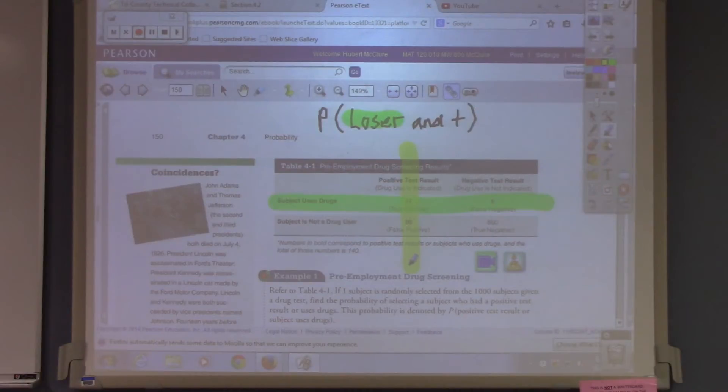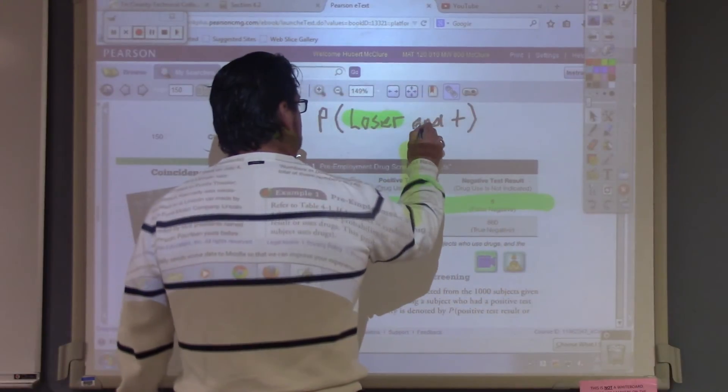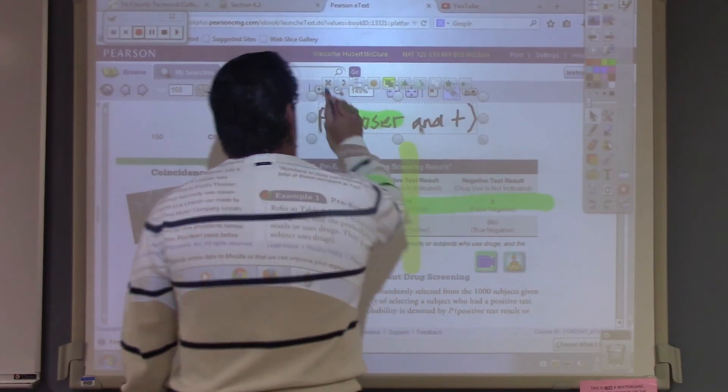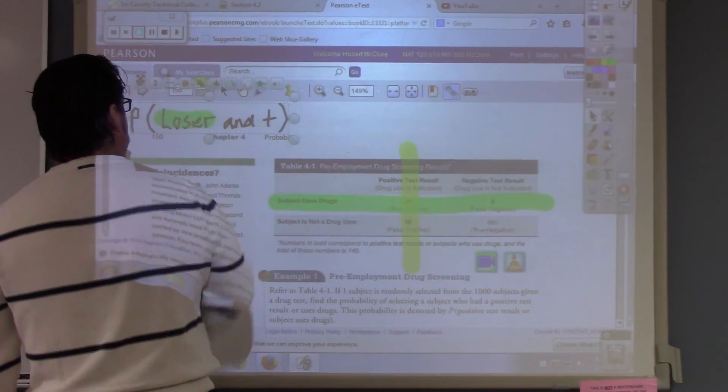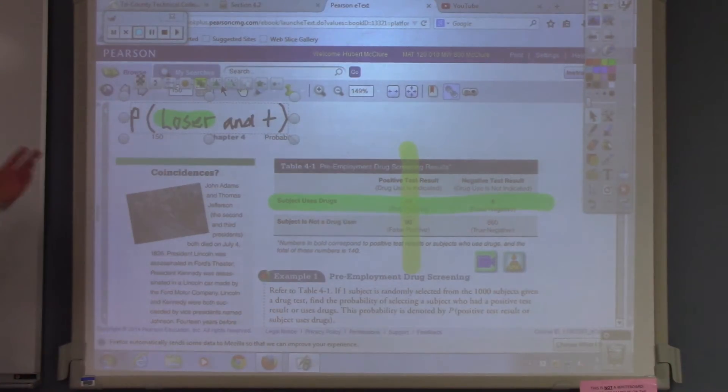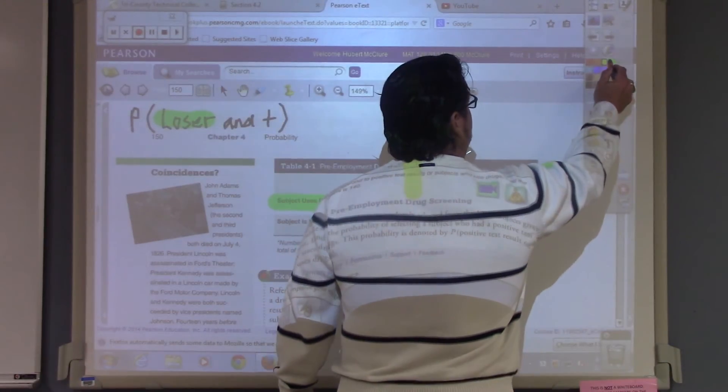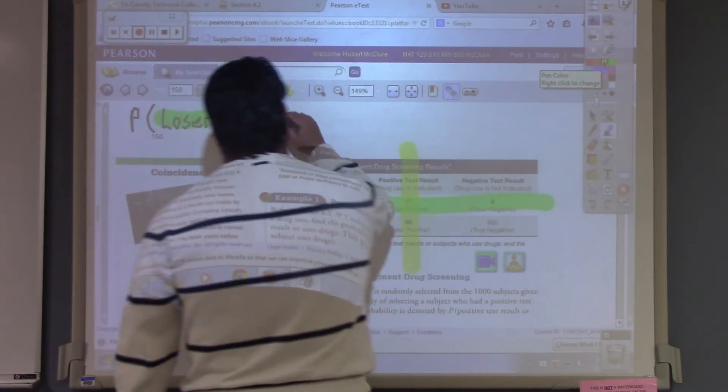Now, we're going to add everything up, because that's what the rule is called, the additive rule. So, we're going to add everything up. Now, the other day, I tried to move something that was highlighted, and it moved the whole thing but left the highlight behind.